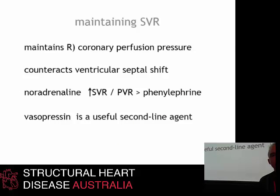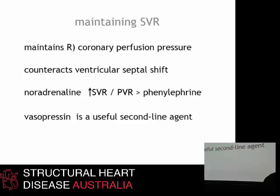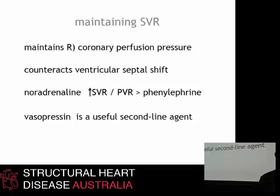Maintaining SVR is critically important in these patients. It's very important that they don't become vasodilated, as that will decrease the right coronary perfusion pressure. The other benefit of increasing SVR in these patients is that it also counteracts some of that interventricular septal shift, thereby decreasing some of the haemodynamic effects of septal shift. Noradrenaline is the drug of choice as it more effectively increases the SVR-to-PVR ratio compared to direct-acting alpha agents such as phenylephrine. Vasopressin is a useful second-line agent because it has a relative sparing effect on the pulmonary vasculature while causing profound systemic vasoconstriction.